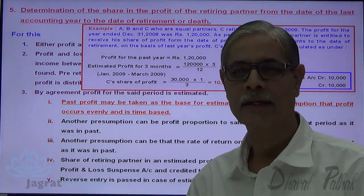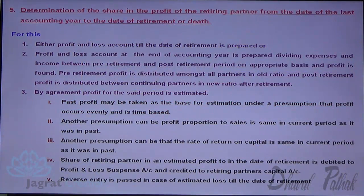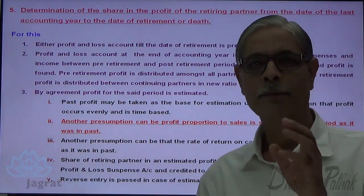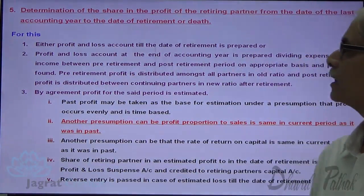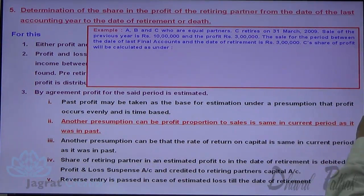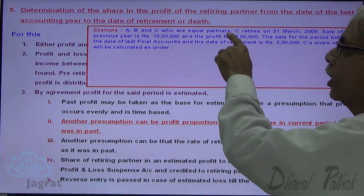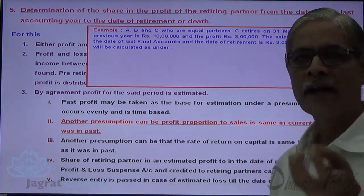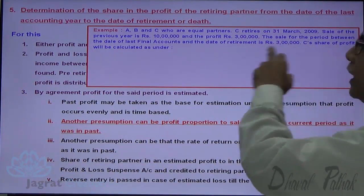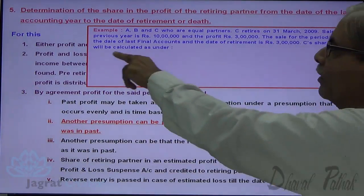Now for the second estimation criteria — profit proportion to sales is the same in the current period. A, B, and C are equal partners; C retires on 31st March 2009. Sales of the previous year were ₹10,00,000 and profit was ₹3,00,000. The proportion of profit to sales in the previous year will be worked out and applied to the sales till the date of retirement. Sales for the period between the last financial accounts and the date of retirement are ₹3,00,000.